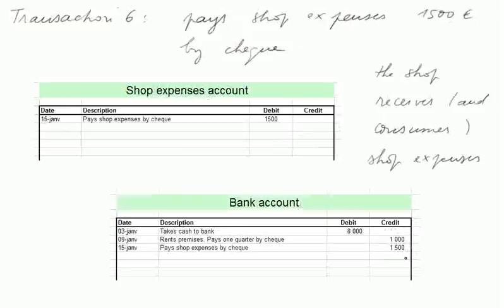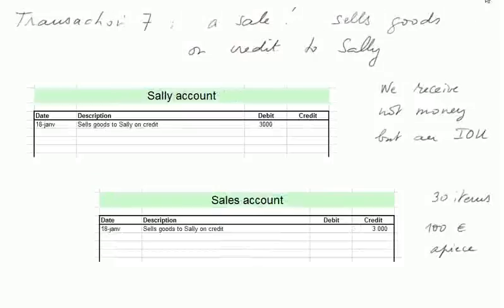During the first accounting cycle, the bank account will always have to be in debit — that is, we shall always have money at the bank, as the banker usually does not accept that we owe him money at first. Transaction seven — a sale. We sell goods on credit to Sally. We don't receive money but receive an IOU from Sally, recorded in Sally's account which is part of the debtors account, debited 3,000 euros. A sales account is credited 3,000 euros — a special account to compute profit later. This corresponds to 30 items at 100 euros apiece.